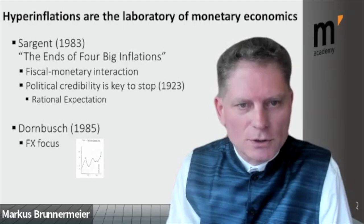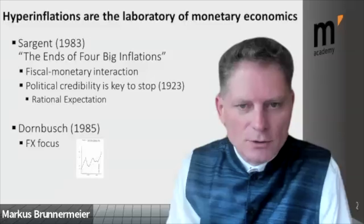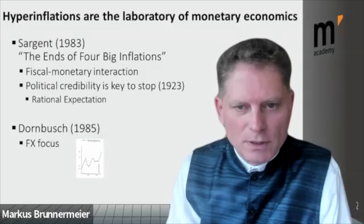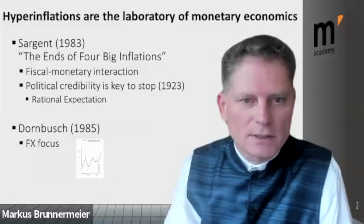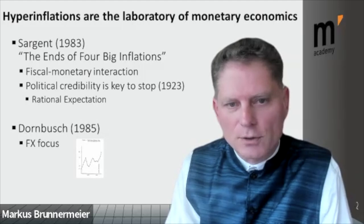Two classic papers are worth noting. One by Sargent, where he studies the ends of four big inflations — the German hyperinflation was one of these. He emphasized the fiscal-monetary interaction and political credibility needed to stop inflation: once you have political credibility on the fiscal side combined with rational expectations, you can bring inflation down. Dornbusch focused more on the effects in the FX market.